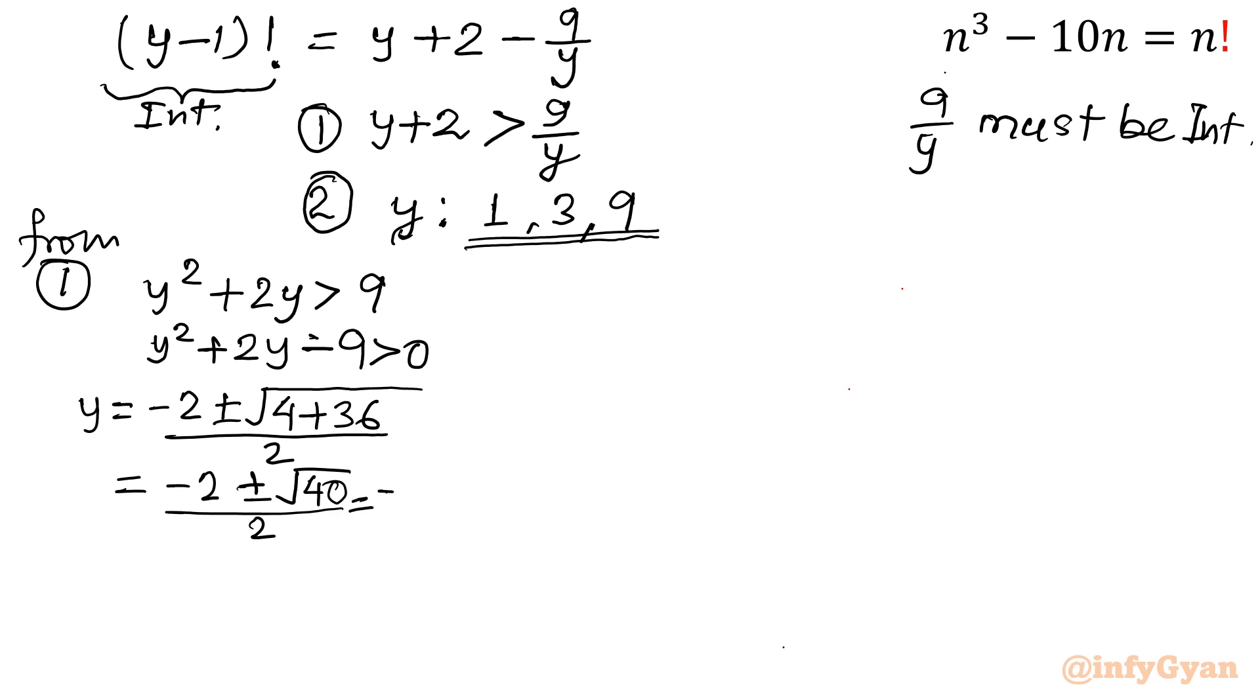Which we can write: -2 plus minus, 10 times 4, so 2√10 over 2. From here I will conclude -1 plus minus √10. That is our y.